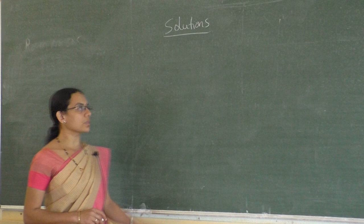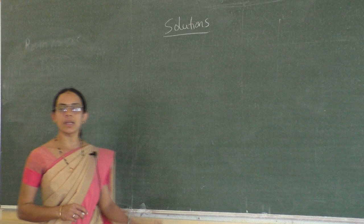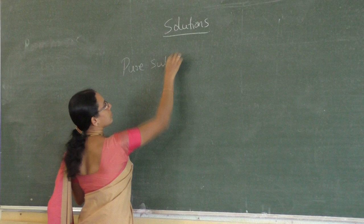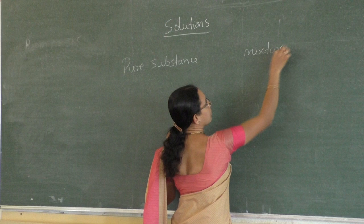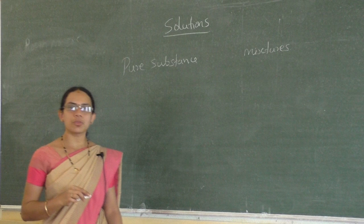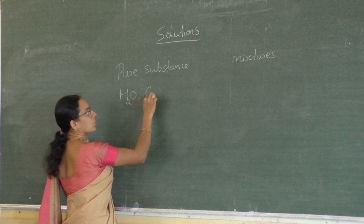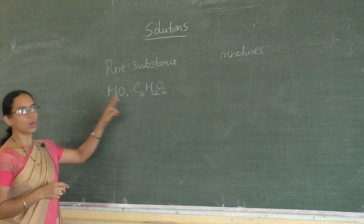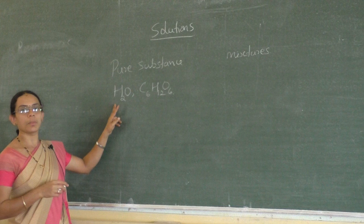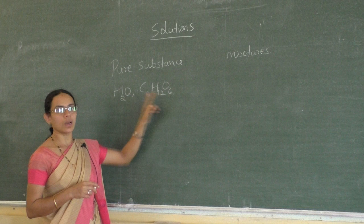In first year you have studied about pure substances and mixtures. Pure substances are those which have definite composition. For example, water and glucose. In water, hydrogen and oxygen are combined in a fixed ratio by mass. And in glucose also, carbon, hydrogen and oxygen are combined together in a fixed ratio by mass.